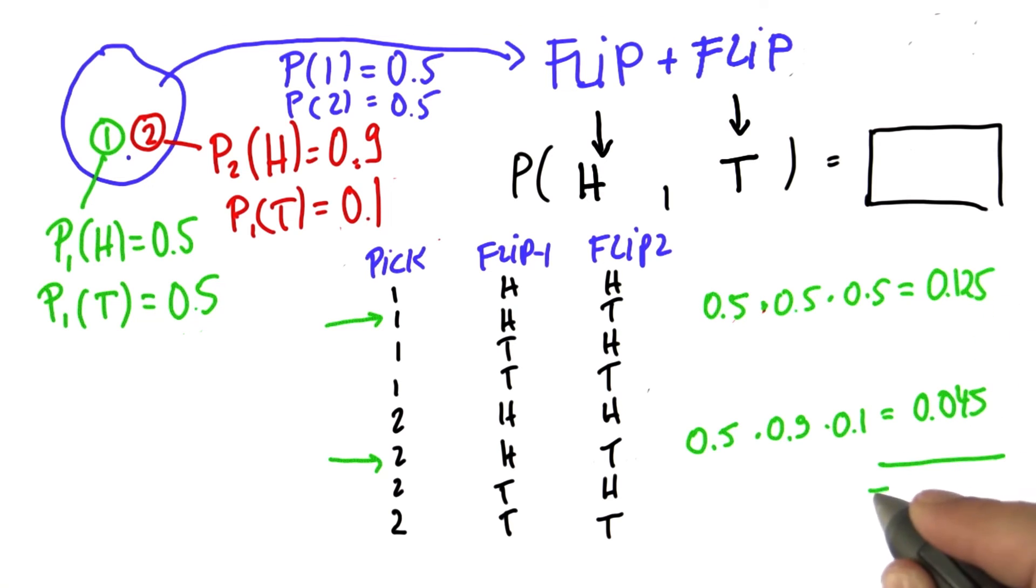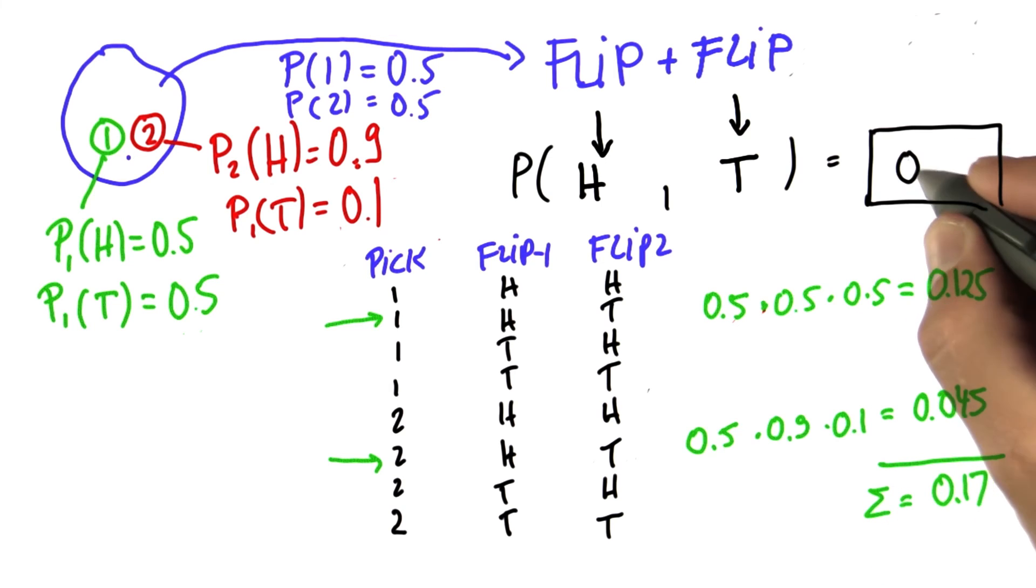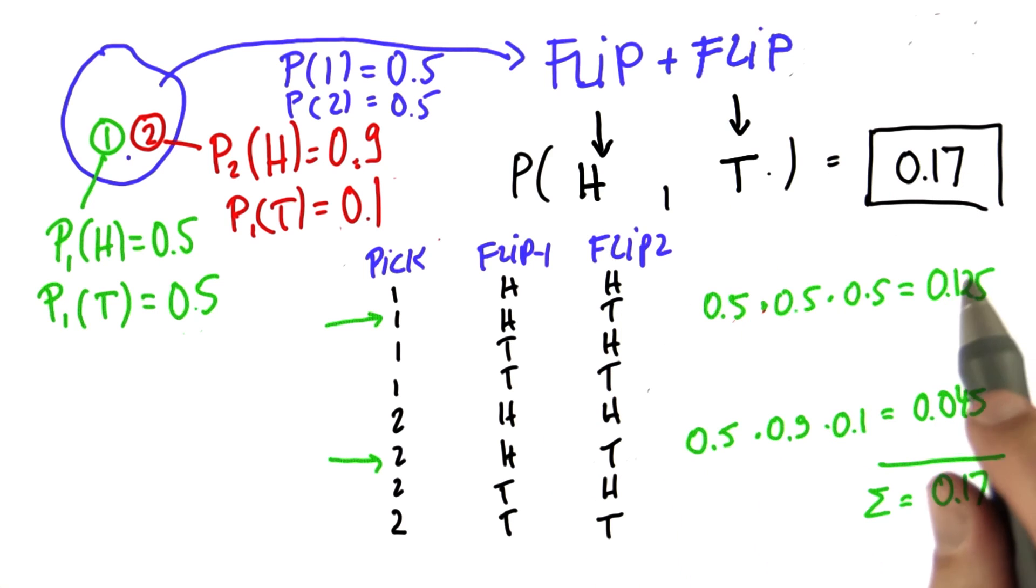Adding these two things together results in 0.17 which is the right answer for the question over here. So that was really non-trivial and I'd be amazed if you got this correct.